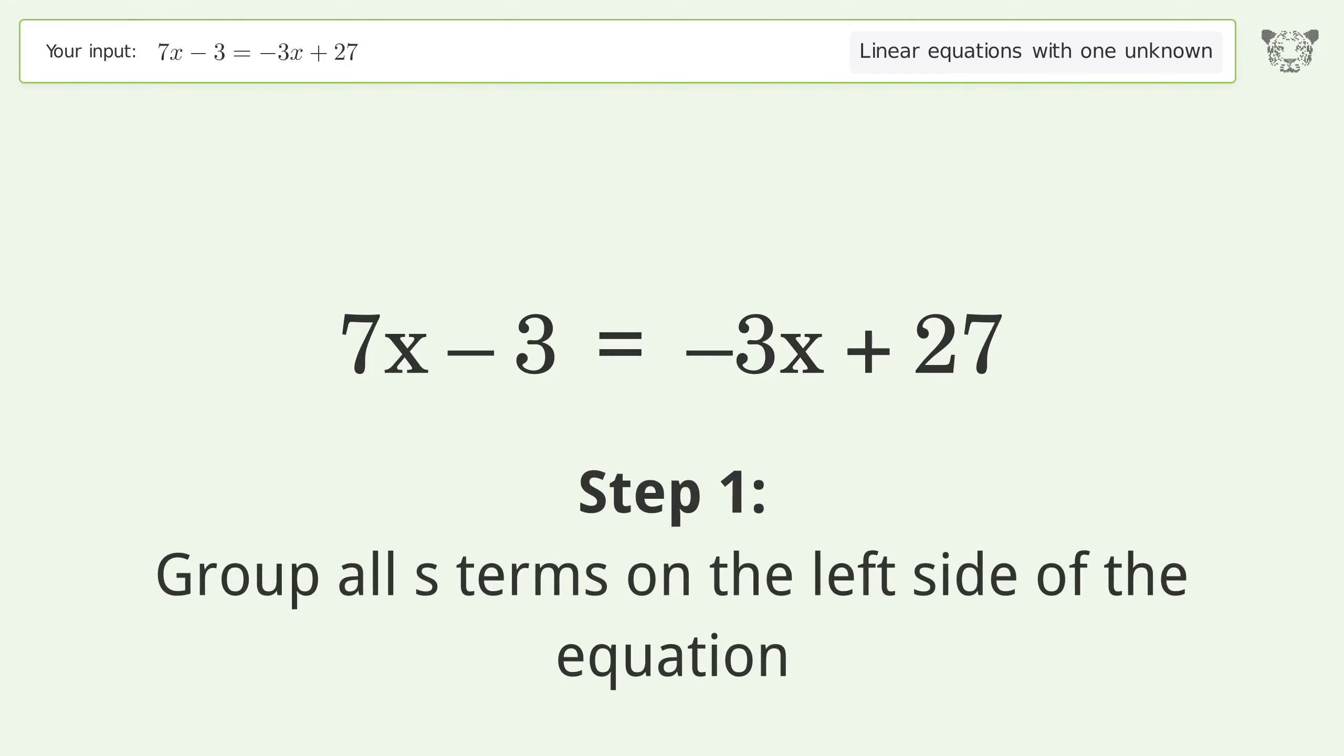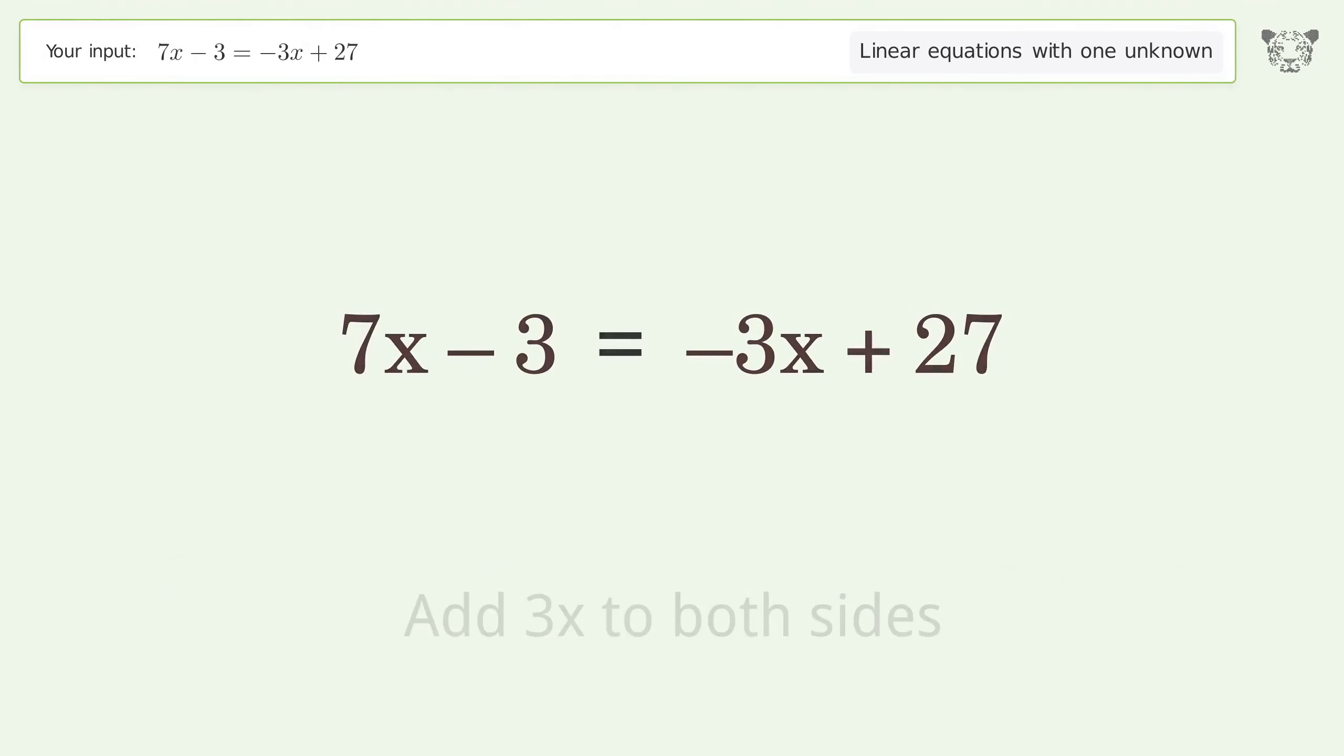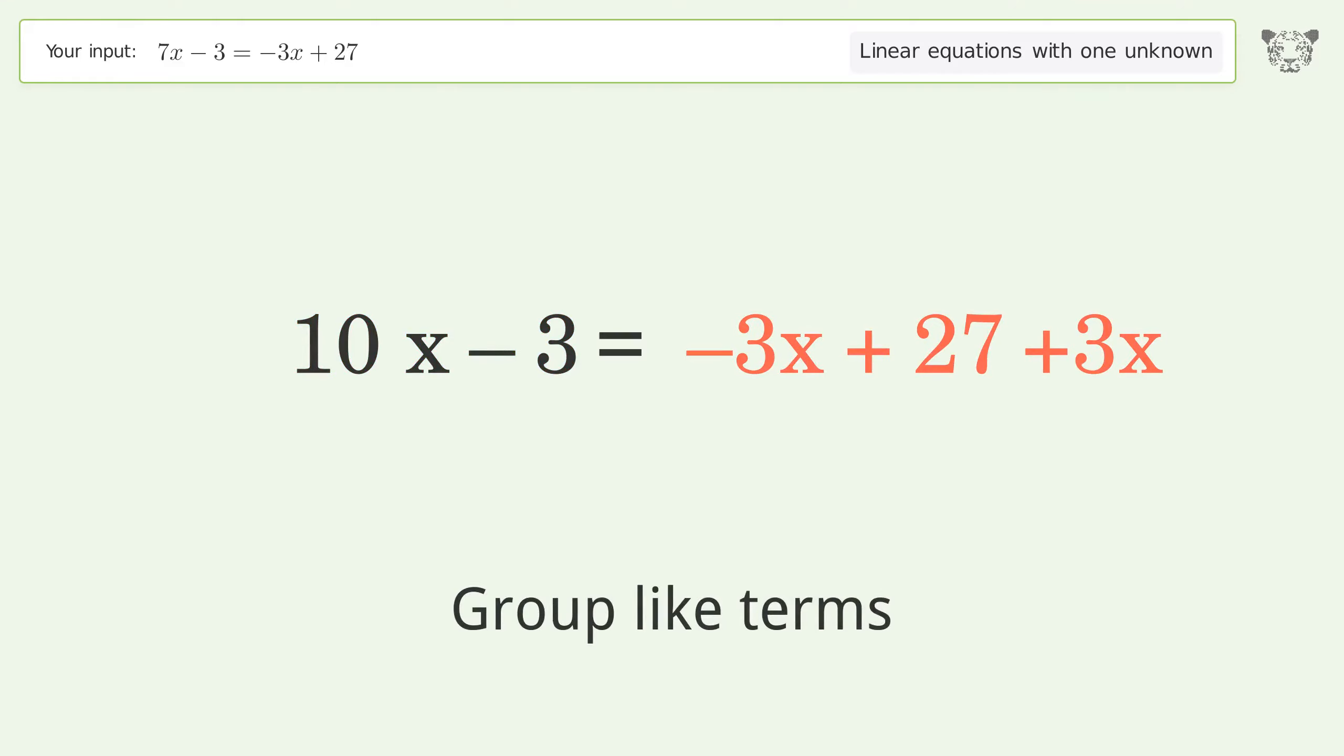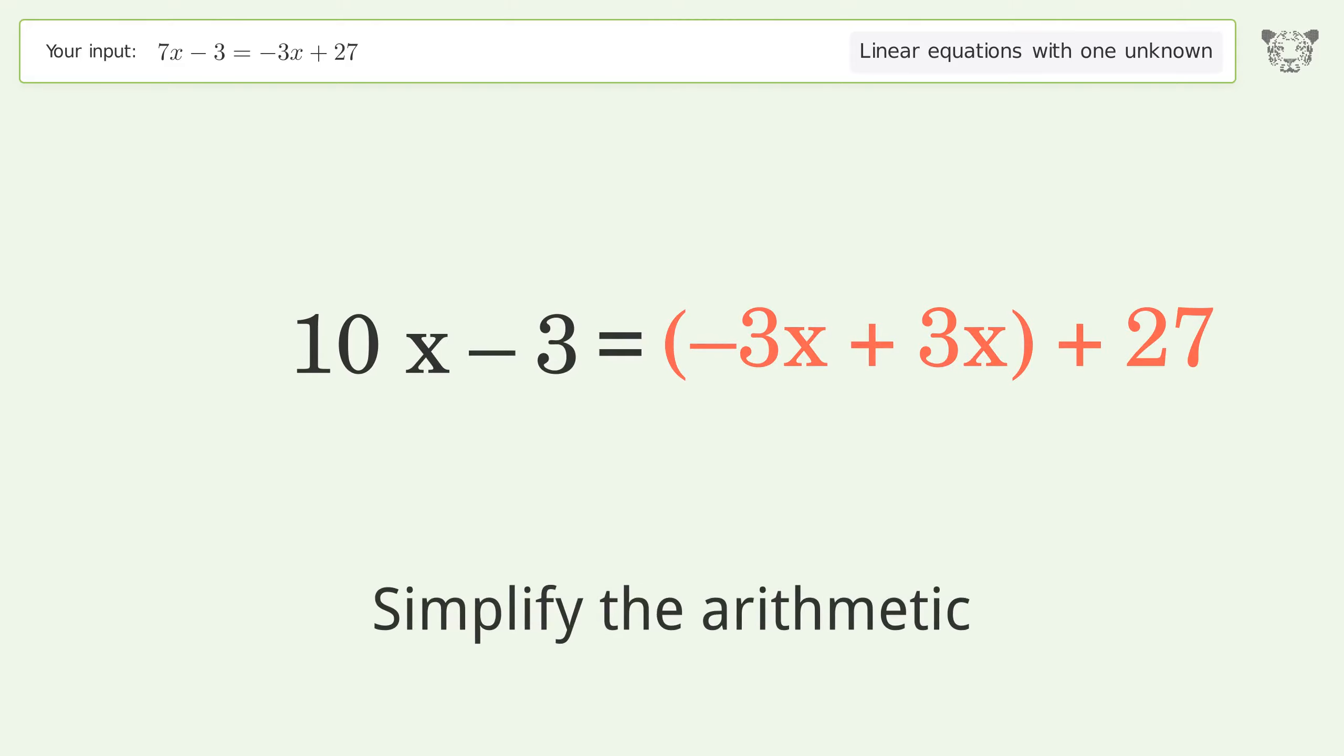Group all x terms on the left side of the equation. Add 3x to both sides. Group like terms. Simplify the arithmetic. Group like terms. Simplify the arithmetic.